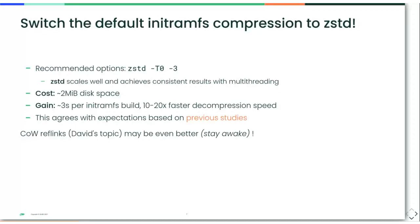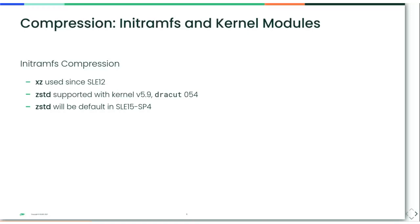Looking at performance: lower is better here, showing time in seconds for compression. For every algorithm both single-threaded and multi-threaded variants are shown. xz takes about 3.5 seconds plus or minus half a second, while zstd at level 3 is about ten times faster at 0.3 seconds. Summing up: switching to zstd for initramfs compression makes a lot of sense. The recommendation is to use minus-T0 minus-3 — minus-T0 activates multi-threading, which scales very well with zstd. The cost is about two megabytes of disk space; the gain is about three seconds per dracut build plus faster decompression speed.